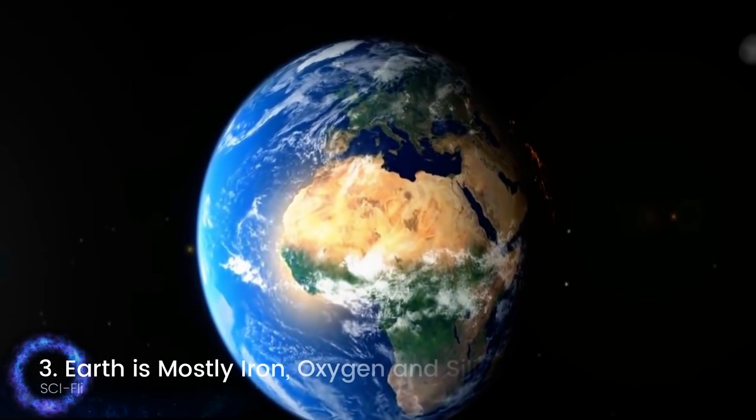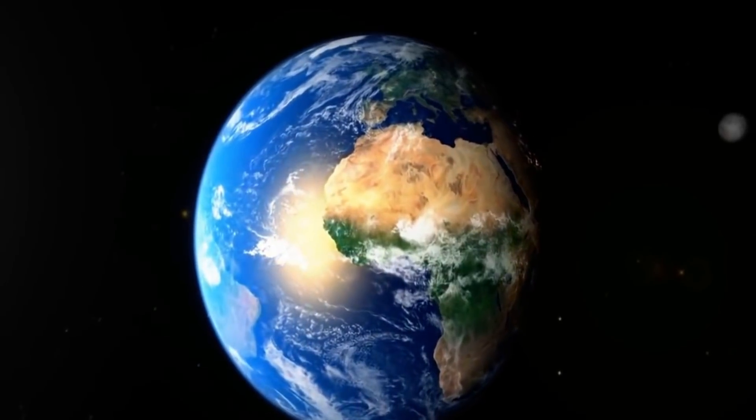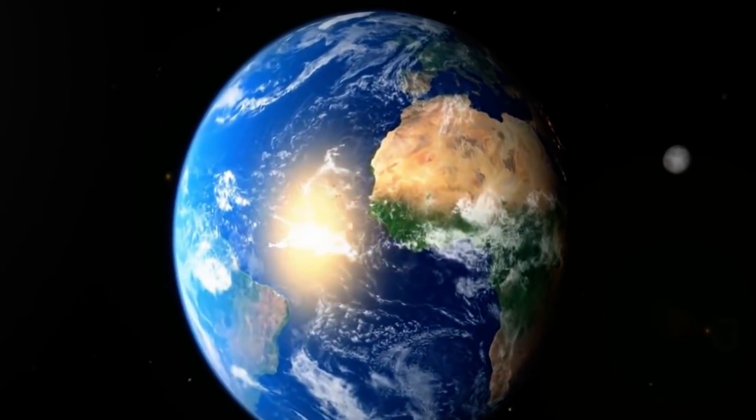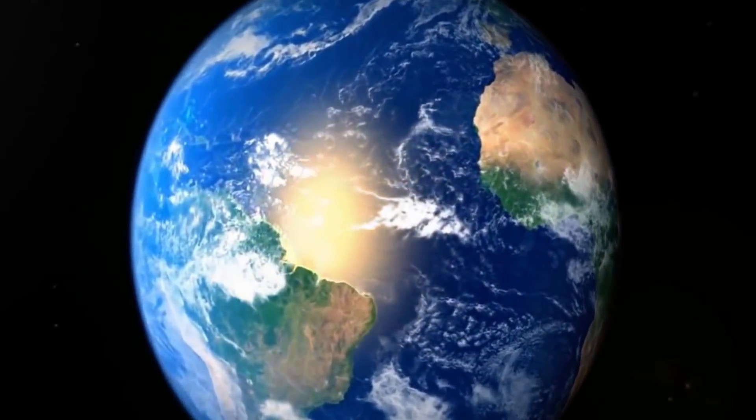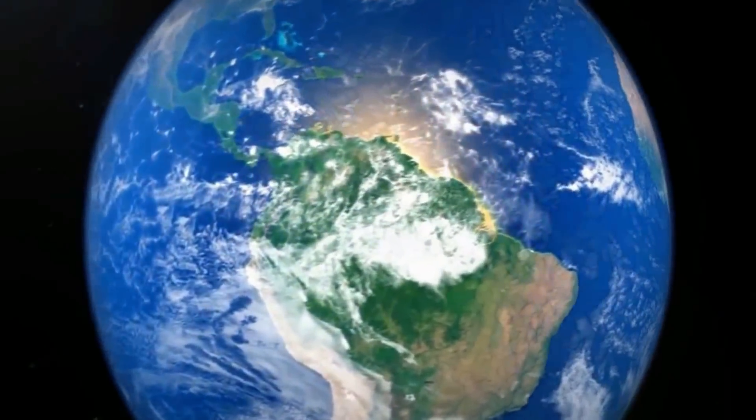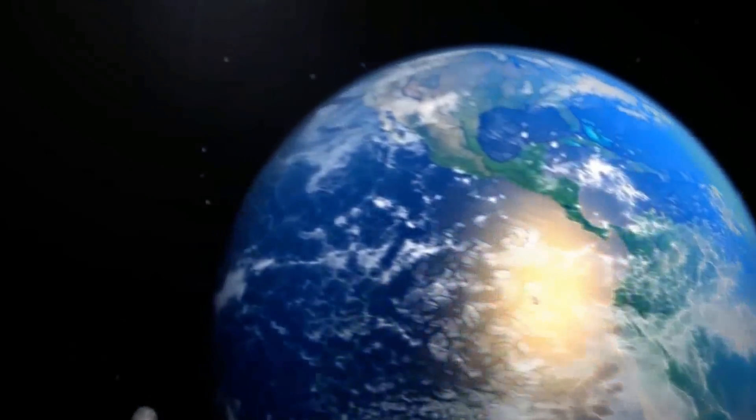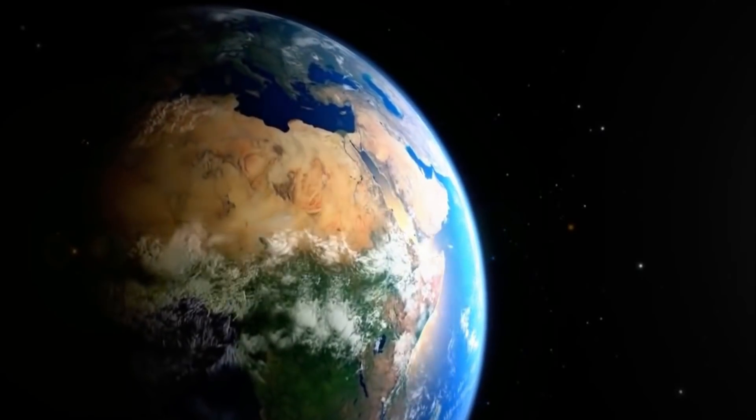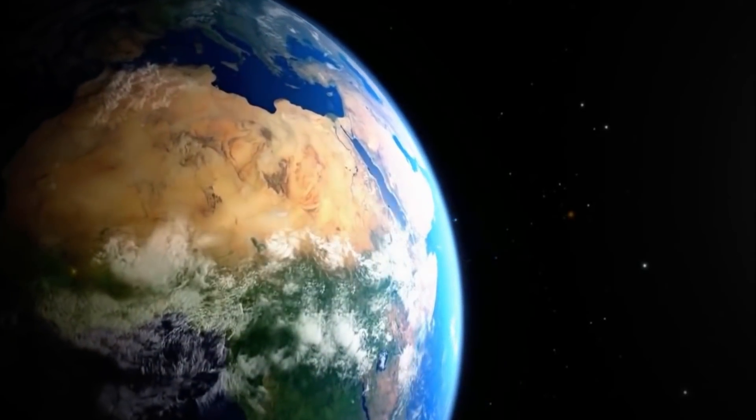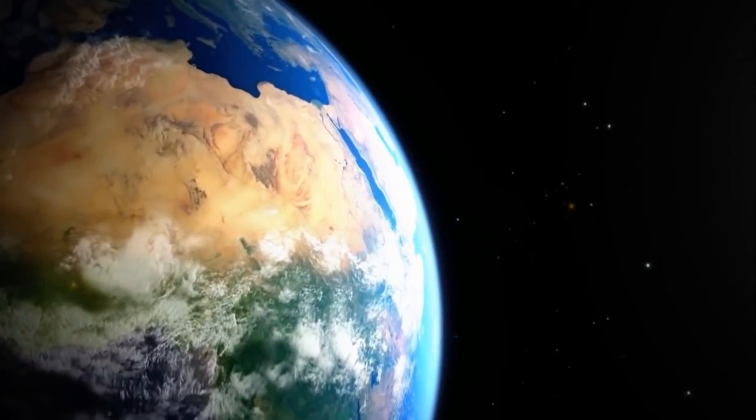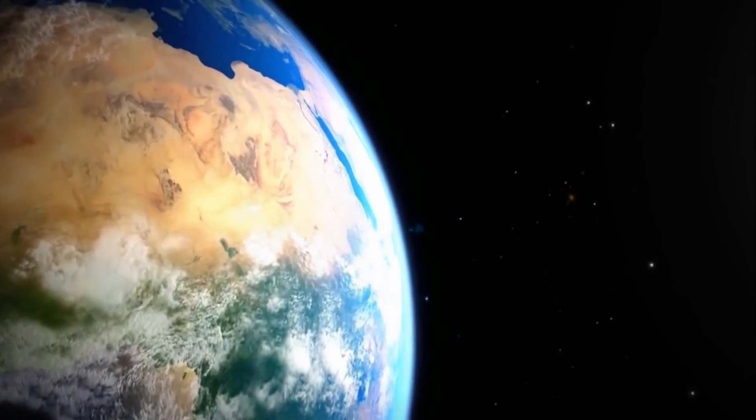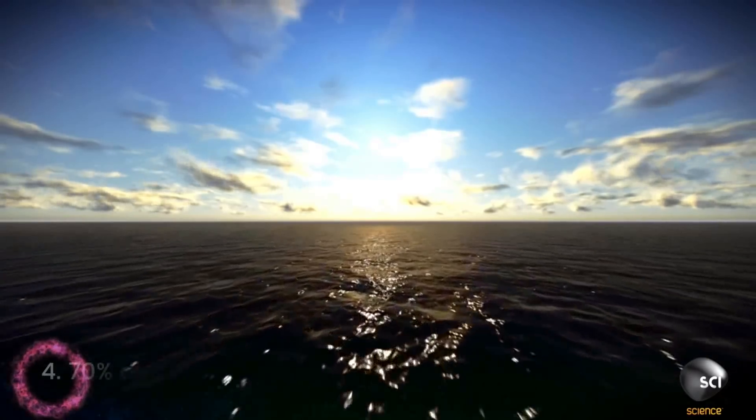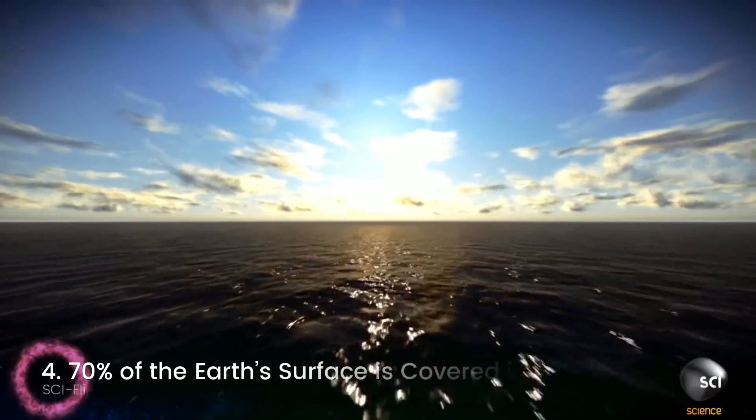Iron, oxygen and silicon. If you could separate the Earth out into piles of material, you'd get 32.1% iron, 30.1% oxygen, 15.1% silicon, and 13.9% magnesium. Of course, most of this iron is actually located at the core of the Earth. If you could actually get down and sample the core, it would be 88% iron. And if you sample the Earth's crust, you'd find that 47% of it is oxygen.